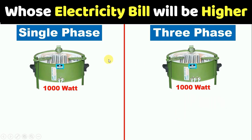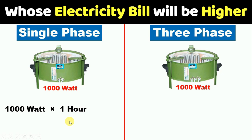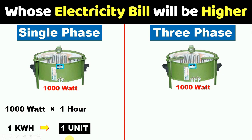Now let us come to our question. We have single phase power supply and three phase power supply. If we connect these with equipment of the same rating, which equipment generates a higher electricity bill — that is, which equipment consumes more units? To understand this, we run the 1000 watt single phase heater continuously for one hour. In this condition, the energy meter will consume one kilowatt hour, that is one unit.